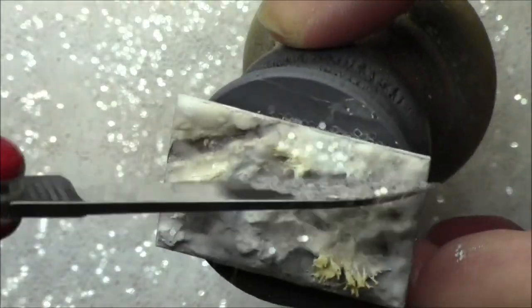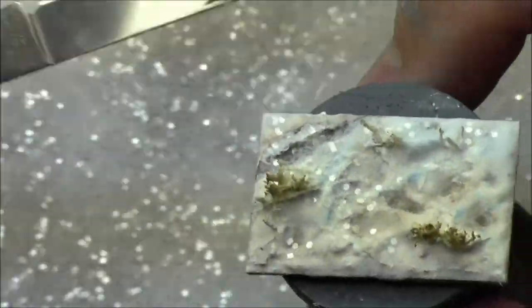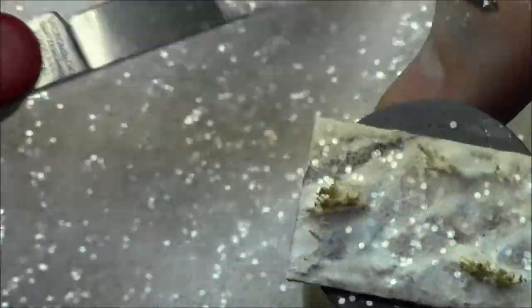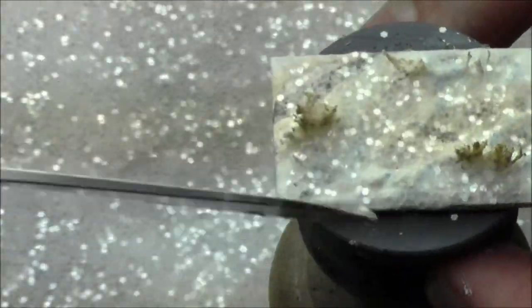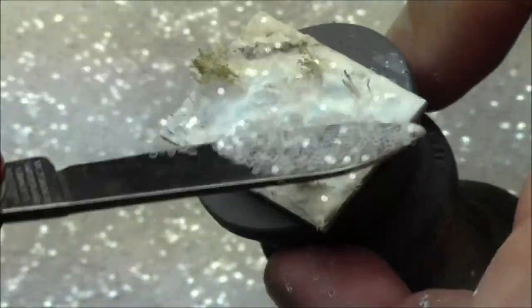Then take your clear glitter and give the top of the base a nice complete coverage there. Clear glitter onto the superglue. And just turn it over and tap off the excess.